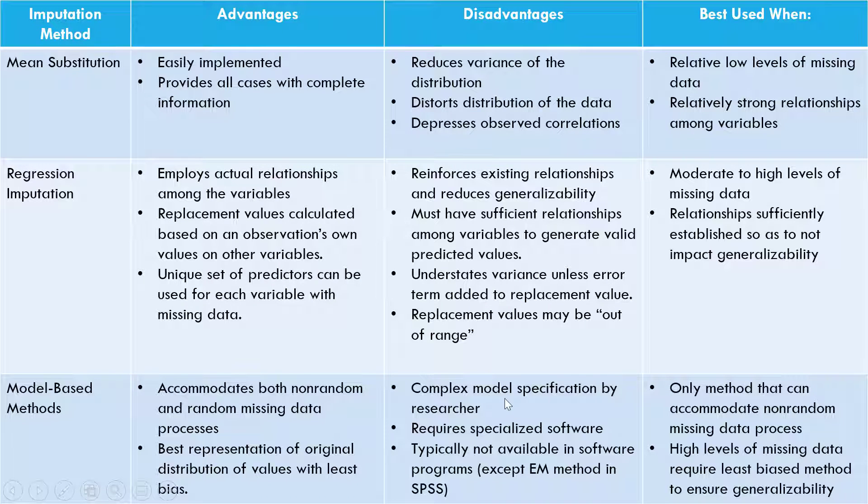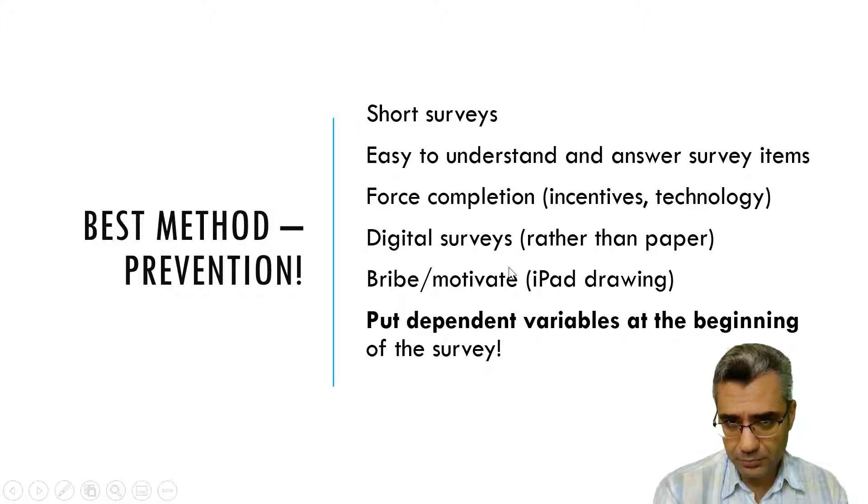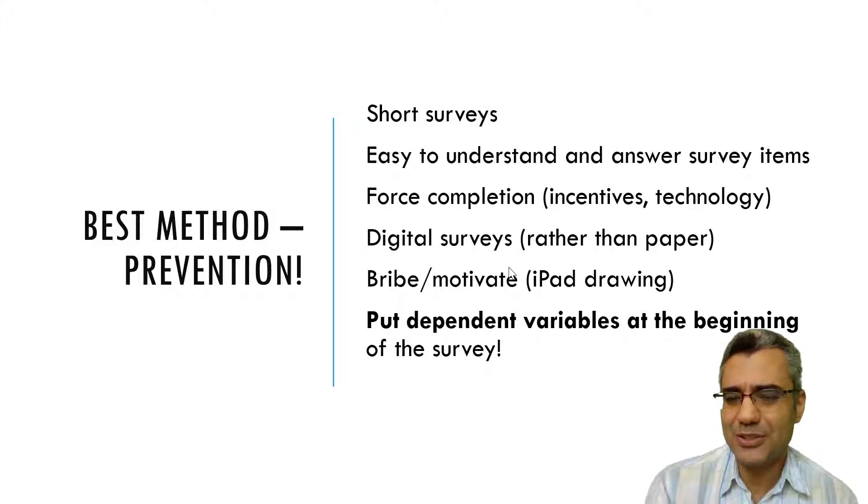Here I copy-pasted this from Hair's textbook, you can see the advantages and disadvantages of each of the methods that we discussed and when they should be used. As I mentioned, I use mean substitution, means I replace the missing cases with mean. It's good when you don't have many missing cases and they are randomly happening.